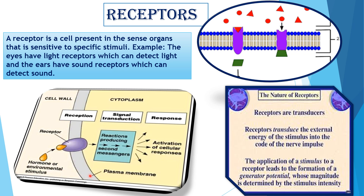Looking at this diagram: this is the plasma membrane, this is the cytoplasm, signal transduction occurs, and after that we get the response. This is the receptor receiving the hormone or environmental stimulus. After that, reactions produce second messengers — that means signal transduction is occurring — and then the response comes: activation of cellular responses. This is the cell wall, this is the cell membrane or plasma membrane, and this is the cytoplasm.